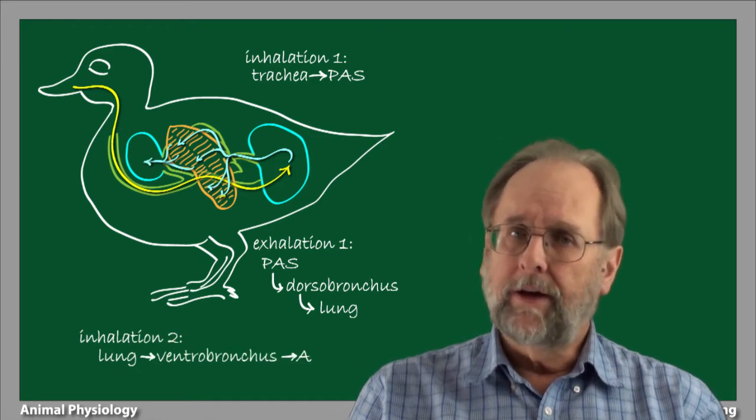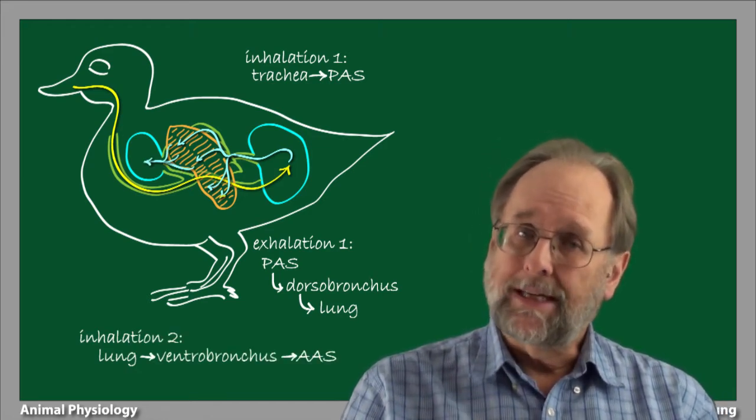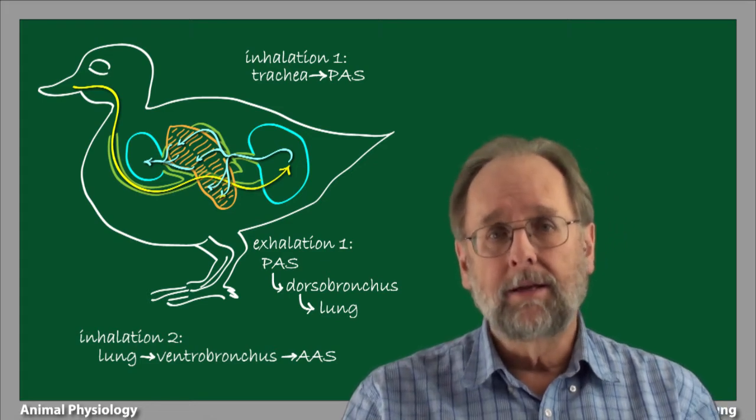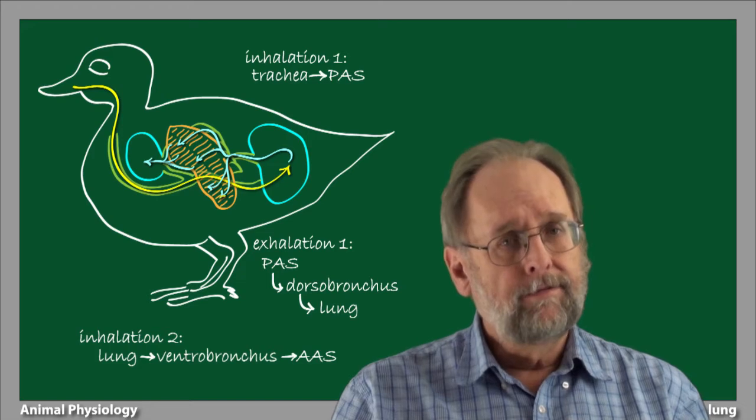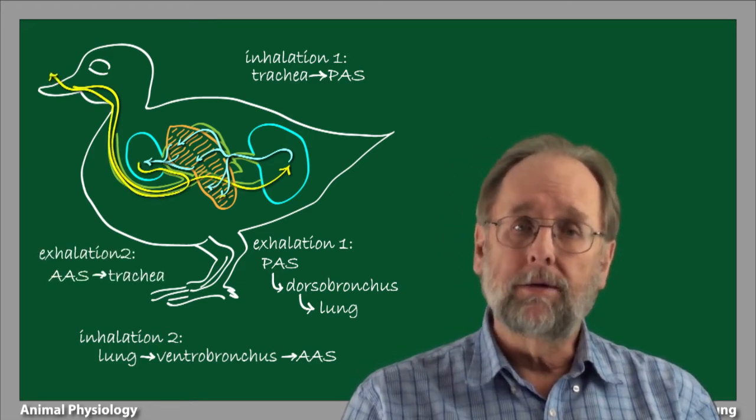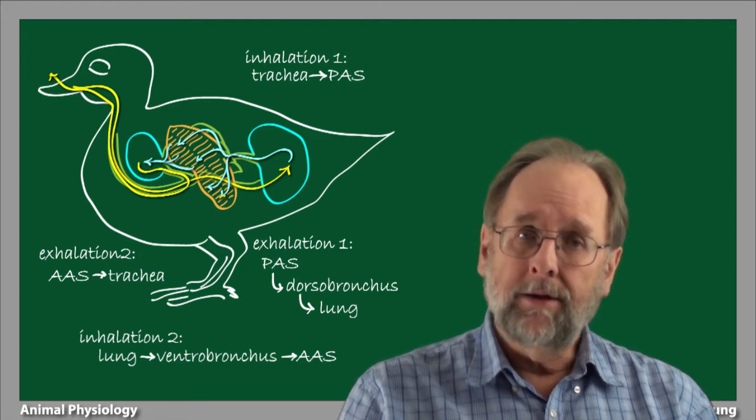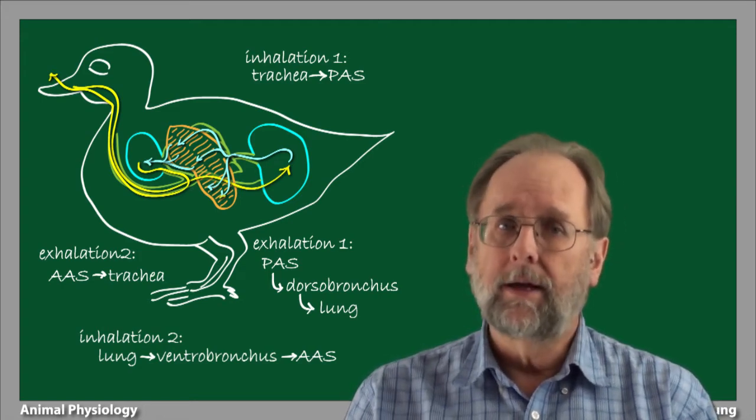During the inhalation phase of the second respiratory cycle, air is drawn from the lungs into the venterbronchi and then into the anterior air sacs. Finally, during the exhalation phase of the second respiratory cycle, air is moved from the anterior air sacs into the trachea and out through the mouth and nose.